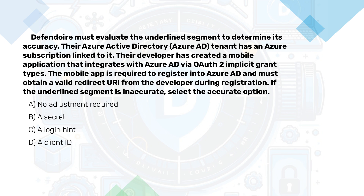If the underlined segment is inaccurate, select the accurate option. A. No adjustment required. B. A secret. C. A login hint. D. A client ID.